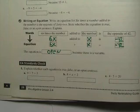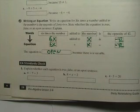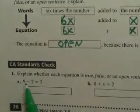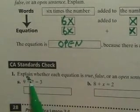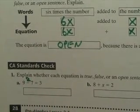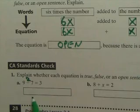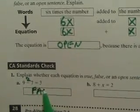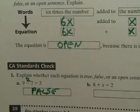Okay, at the very bottom it says, explain whether each equation is true, false, or open. So you have these three to write down true, false, or open. Do that now, quickly. Okay, 9 minus 7, that's 2. So 2 equals 3. Is that true, false, or open? That's false. 2 does not equal 3.